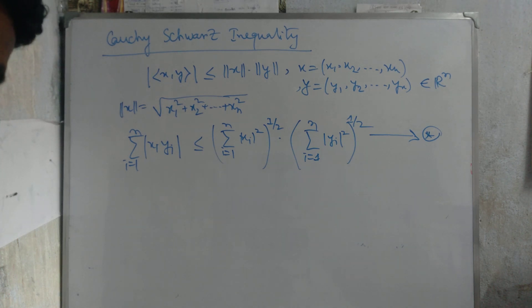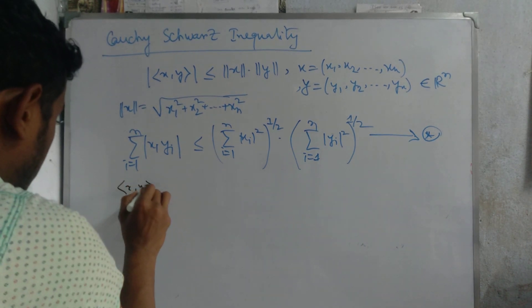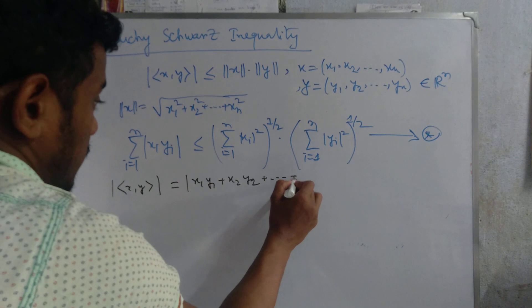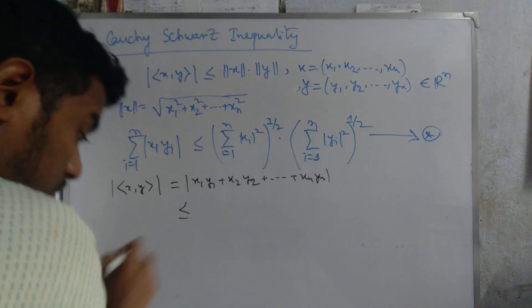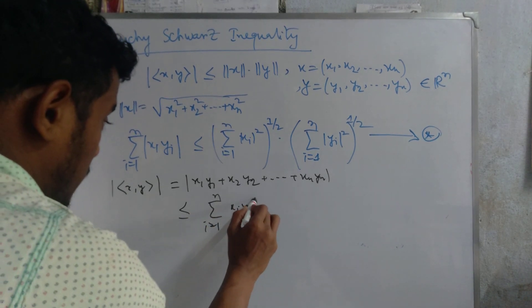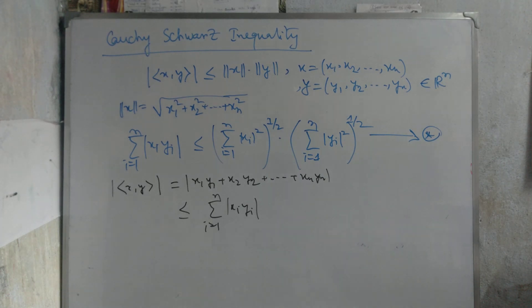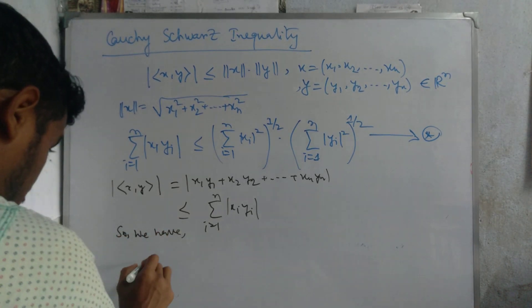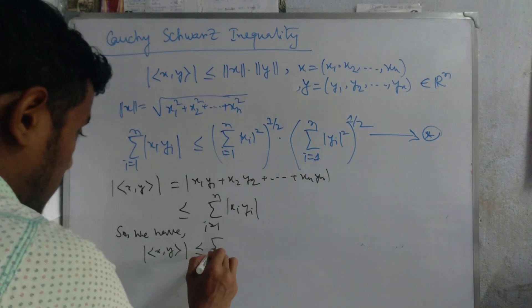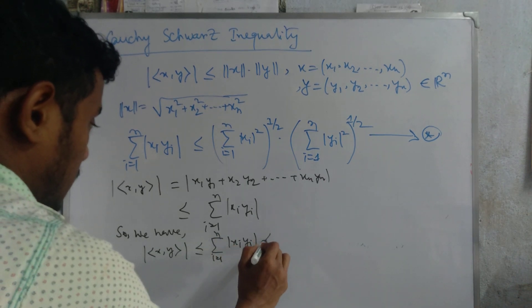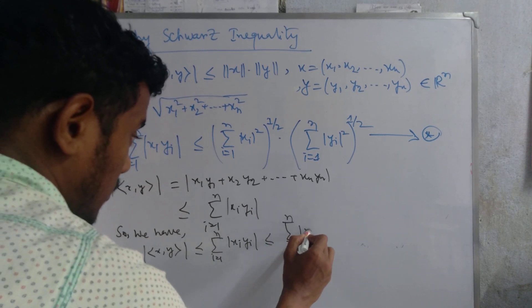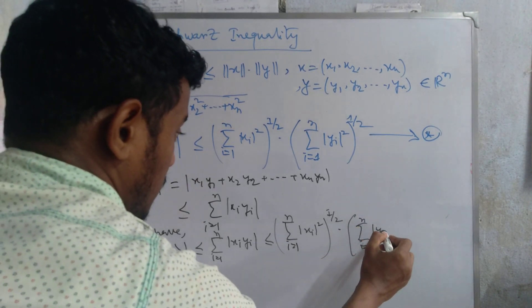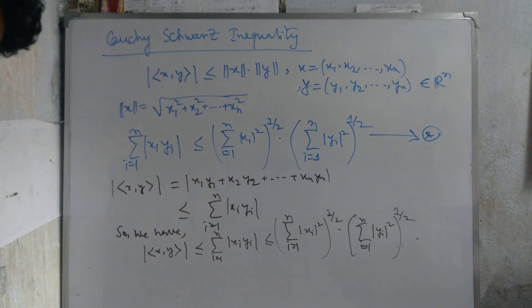We also write: ‖x·y‖ = |x₁y₁ + x₂y₂ + ... + xₙyₙ| ≤ Σᵢ₌₁ⁿ |xᵢyᵢ| ≤ (Σᵢ₌₁ⁿ |xᵢ|²)^(1/2) · (Σᵢ₌₁ⁿ |yᵢ|²)^(1/2).